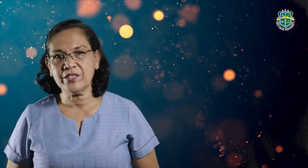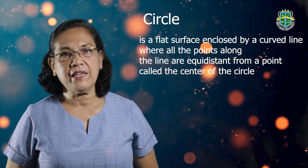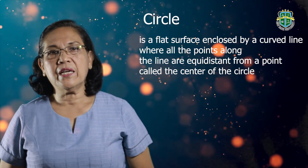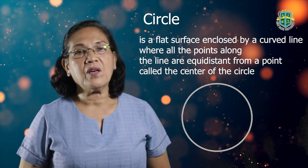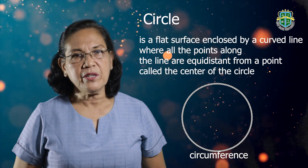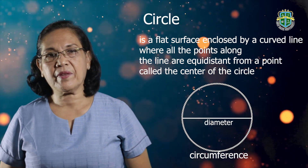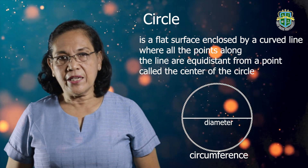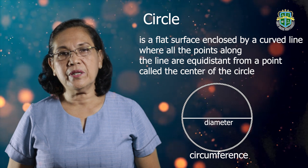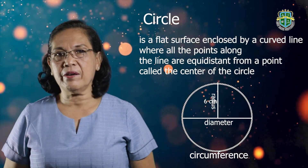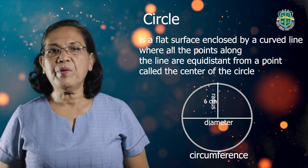The next polygon is a circle. A circle is a closed curved line where all the points along the line are equidistant to a point called the center of the circle. There are parts to take note about a circle. Number one, we have the circumference — the closed curved line that bounds the circle. Another is the diameter, which is the longest line that joins two points along the circle. Another part is the radius, which is the line that joins the center of the circle to any point along the circle.